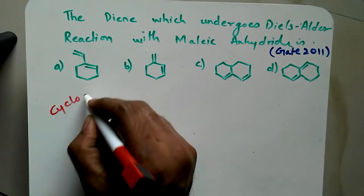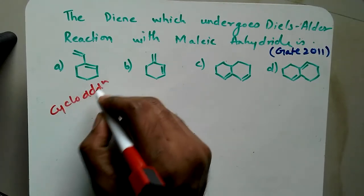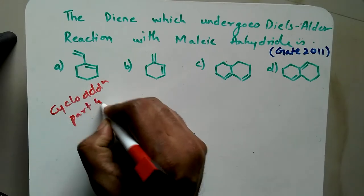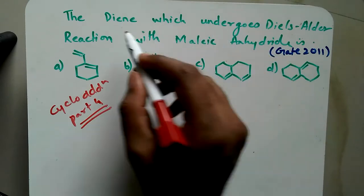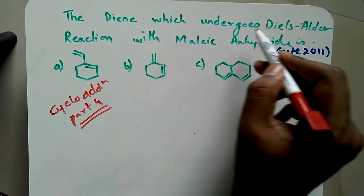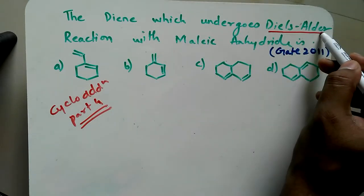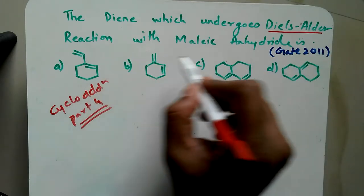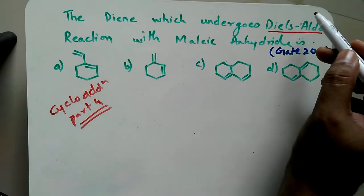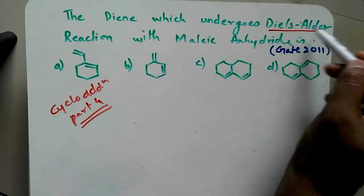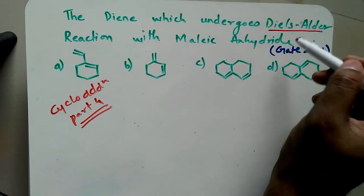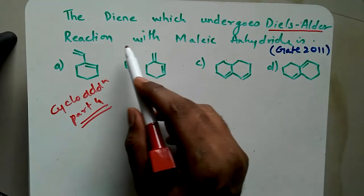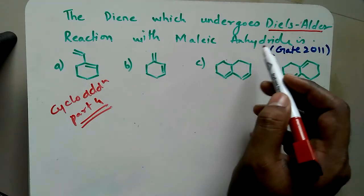Welcome to cycloaddition reactions part 4. This is a type of pericyclic reaction and here we have the diene which undergoes Diels-Alder reaction with maleic anhydride. I would recommend you to check all the videos on cycloaddition reactions - the link will be over here. Now which one will be undergoing reaction? That is very important.